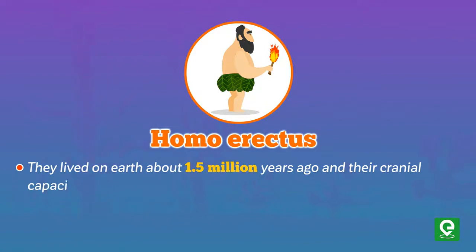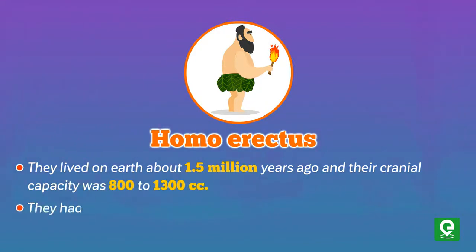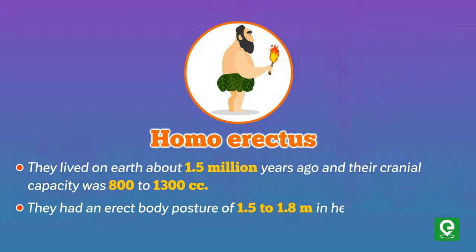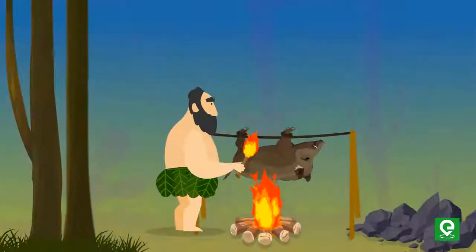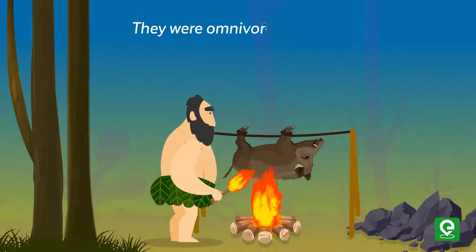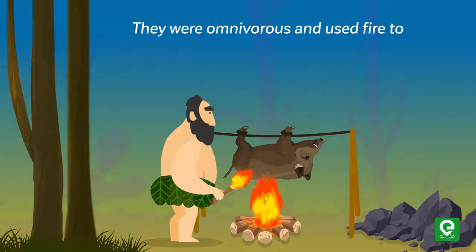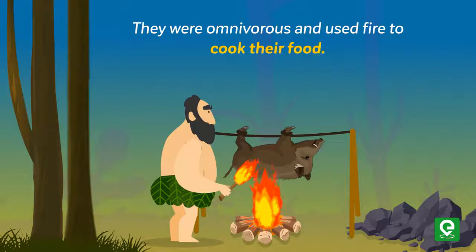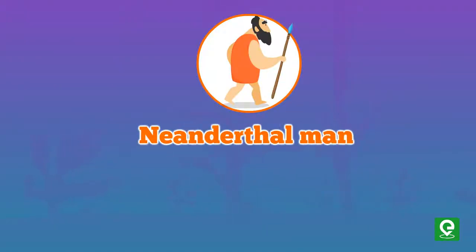Homo erectus lived on Earth about 1.5 million years ago. Their cranial capacity was 800 to 1300 CC. They had an erect body posture, standing 1.5 to 1.8 meters in height. They were omnivorous and used fire to cook their food.